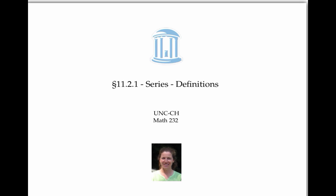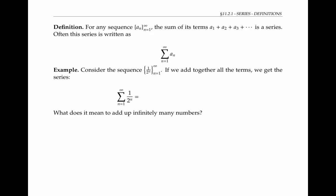This video introduces the idea of a series and how to find its sum. For any sequence a sub n, for n equals one to infinity, the sum of its terms — a sub one plus a sub two plus a sub three, and so on — is called a series. Often this series is written in sigma notation as the sum from n equals one to infinity of a sub n.